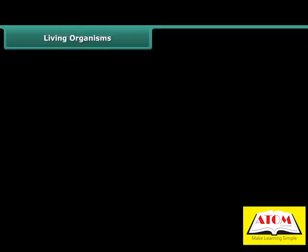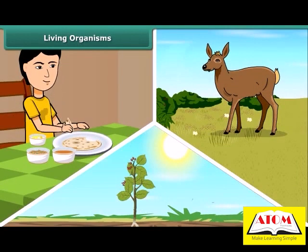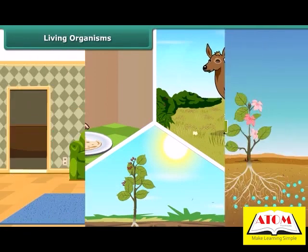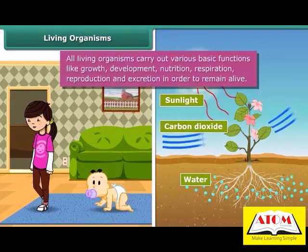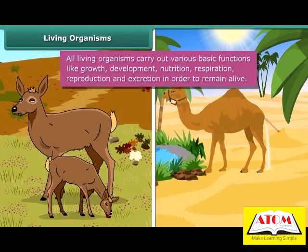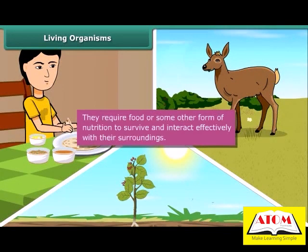Living organisms — human beings, animals, and plants — require food to survive in their surroundings. They show great divergence in their physical appearance, but they all grow and develop during their life cycle. All living organisms carry out various basic functions like growth, development, nutrition, respiration, reproduction, and excretion in order to remain alive.